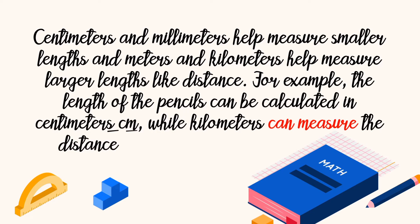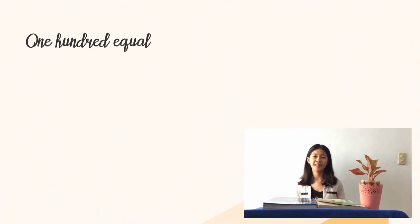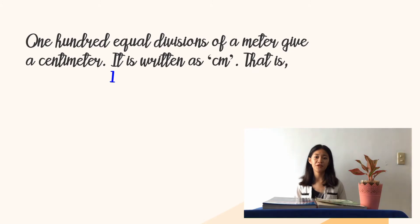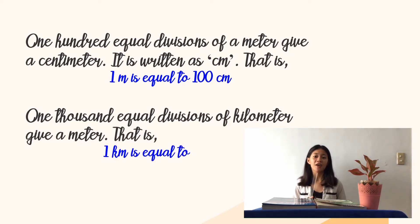Centimeters and millimeters help measure smaller lengths, and meters and kilometers help measure larger lengths like distance. For example, the length of pencils can be calculated in centimeters, while kilometers can measure the distance between two buildings or places. One hundred equal divisions of a meter give a centimeter — one meter is equal to one hundred centimeters. One thousand equal divisions of a kilometer give a meter — one kilometer is equal to one thousand meters.